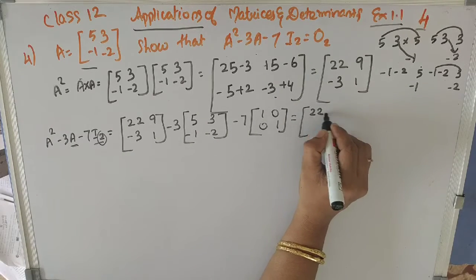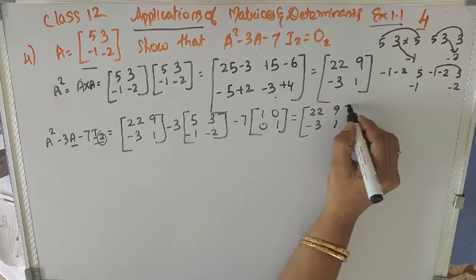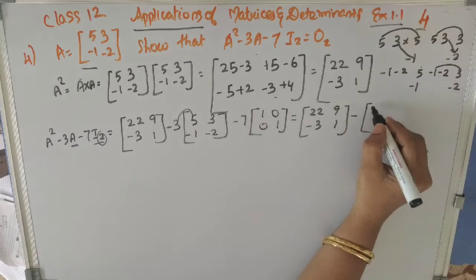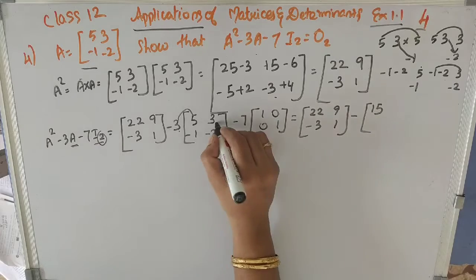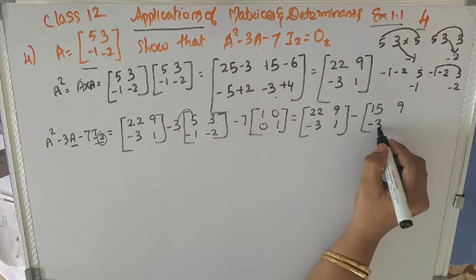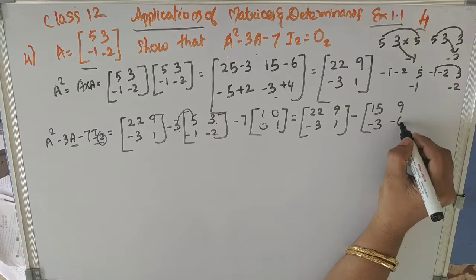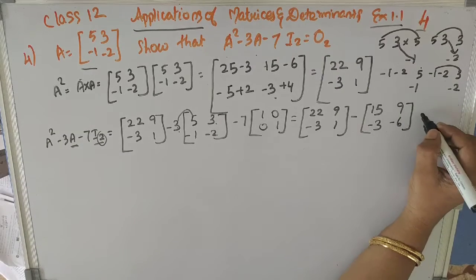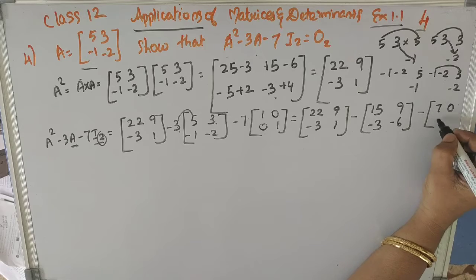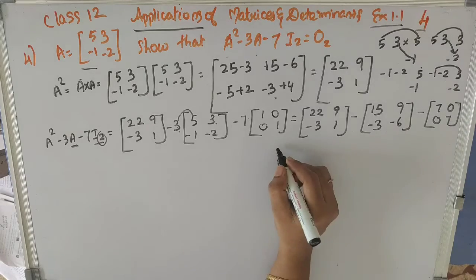Now we can simplify. A² is 22, 9, minus 3, 1. We multiply 3 inside matrix A: 3 into 5 is 15, 3 into 3 is 9, 3 into minus 1 is minus 3, 3 into minus 2 is minus 6. Then multiply 7 inside I₂: 7 into 1 is 7, 7 into 0 is 0, 7 into 0 is 0, 7 into 1 is 7.